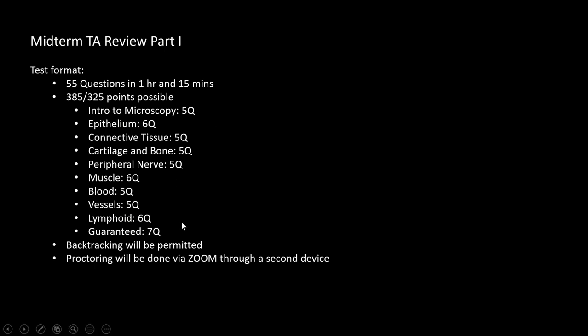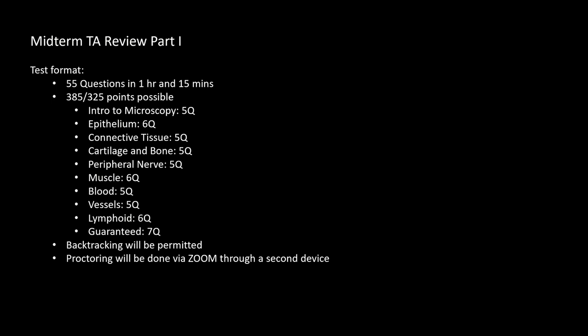The exam will be like your quizzes — questions pulled from a larger question bank. For every topic covered, there'll be a pool of about 15 questions, and the questions you get will be pulled from that, so not everybody gets the exact same questions. The breakdown is: 5 questions on intro to microscopy, 6 on epithelium, 5 on connective tissue, 5 on cartilage and bone, peripheral nerve, 6 on muscle, and 6 on lymphoid. Try to study everything I'm pointing out and you should be good.